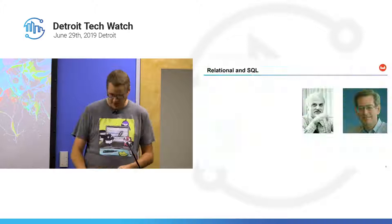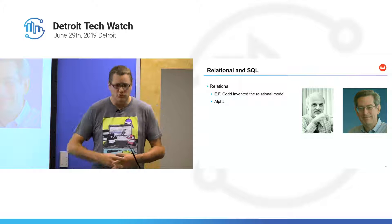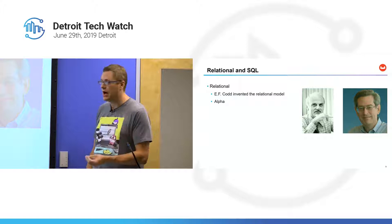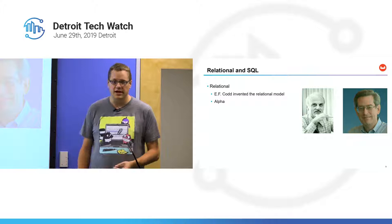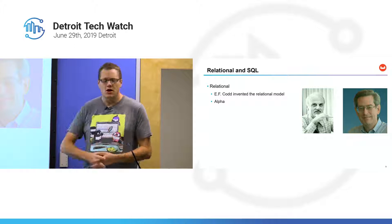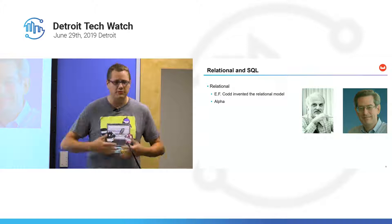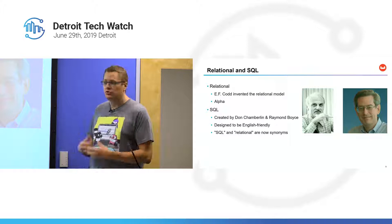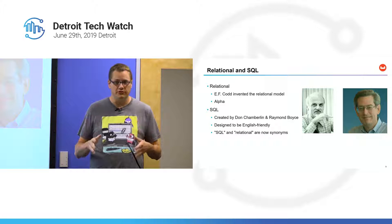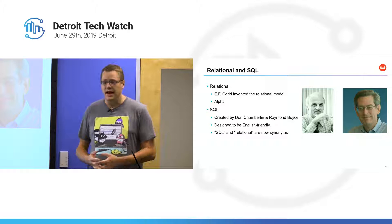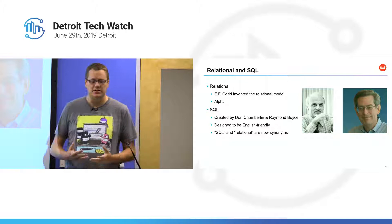SQL and relational — EF-Codd is the man who wrote the original paper on relational databases. He invented the relational model and designed a language for interacting with relational data called Alpha. Alpha was never implemented, but it was influential on languages that came after. So EF-Codd is kind of responsible for coming up with the idea of tables and relations. SQL was then created later by Don Chamberlain and Raymond Boyce.